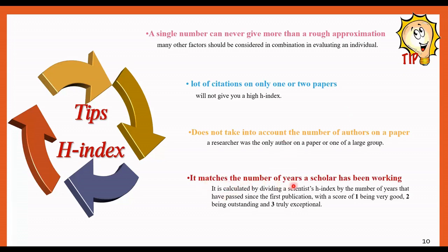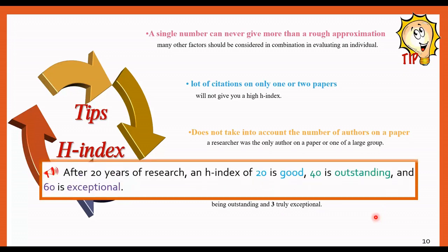The fourth one: H-index matches the number of years a scholar has been working in the field of a respectable score. Hirsch tried to calculate it by dividing a scientist's H-index by the number of years that have passed from the first publication. With this one, with a score of one, it would be very good for categorizing them. If it is two, being outstanding as a researcher, and three, truly exceptional. There is another definition that Hirsch presented: after 20 years of research, an H-index of 20 is good, 40 is outstanding, and 60 is exceptional.